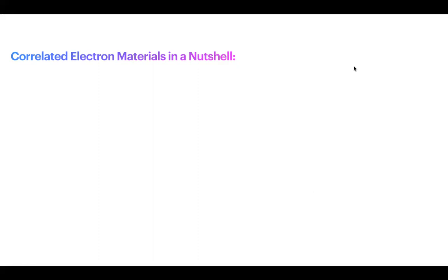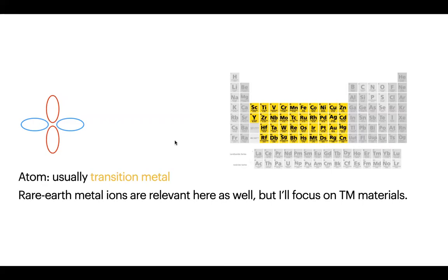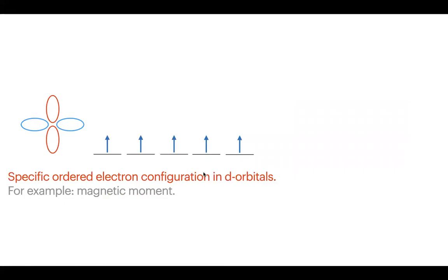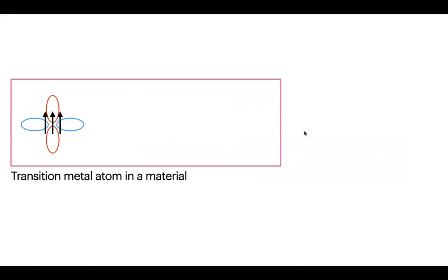What are correlated electron materials? The basic point is you have an atom — usually a transition metal atom, though rare earth metal ions also apply — and if you have a partially filled d shell, you can have a specific ordered electron configuration in the d orbitals, like a magnetic moment shown here. If the shell is empty or fully filled, you won't really have much order.